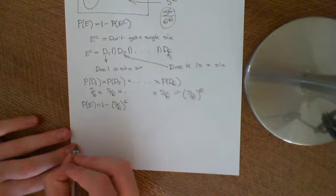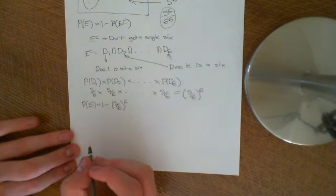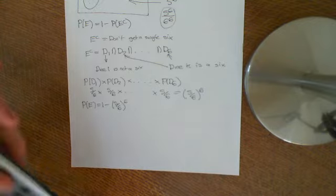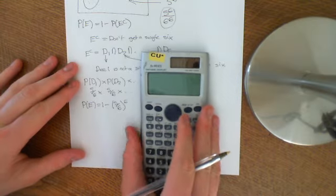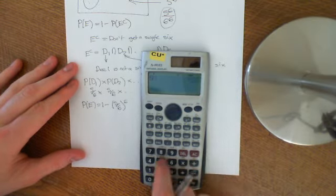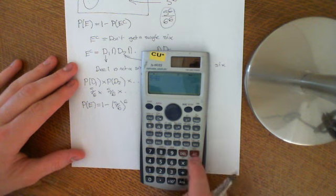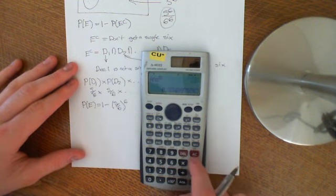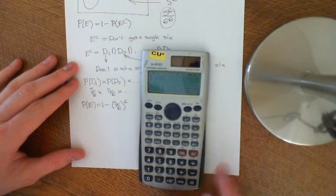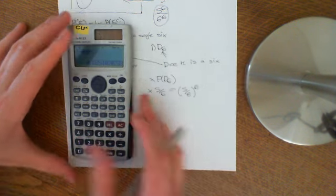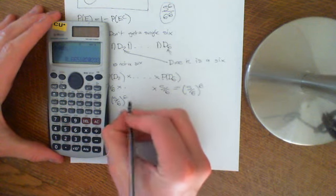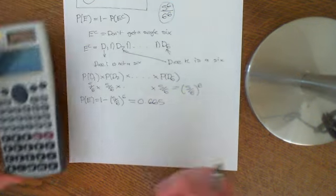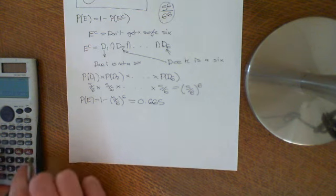Let's calculate this value. (5/6)^6 gives us about a third. One minus that gives 0.665. So the probability of getting at least one six when rolling six dice is approximately 0.665 — a little over two-thirds.